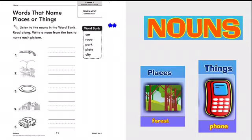Now I want you to read the word bank with me. One. Car. Two. Rope. Three. Park. Four. Plate. And five. City. Very good.